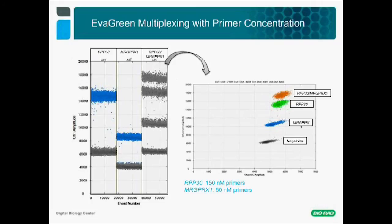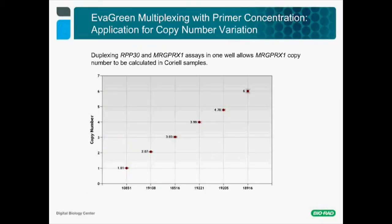This assay configuration was used to assess copy number variation for MRGPRX1 in different cell lines. The use of duplex assays with EvaGreen yields a precise and accurate determination of copy numbers for each cell line. Each Coriell cell line DNA is identified on the x-axis and the respective copy number on the y-axis. The data obtained by the EvaGreen multiplex experiments leads to perfect quantification of both target and reference, aligning copy numbers ranging from 1 to 6 with their expected values.